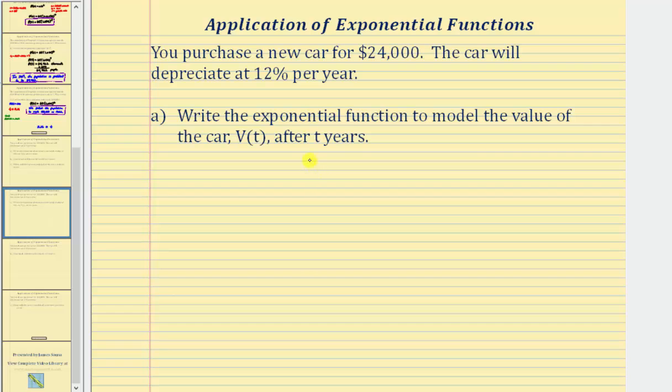So our function V of t is going to be in the form of a times b raised to the power of t. Remember, a is equal to the initial amount, and here we're told that V of t equals the value of the car, so the starting value is $24,000, so a equals $24,000.